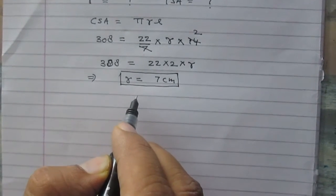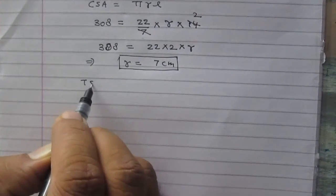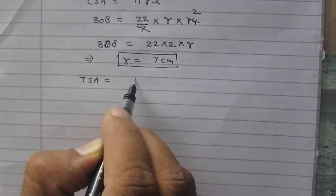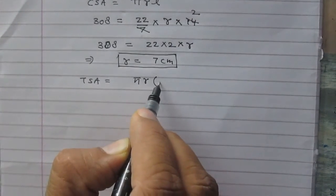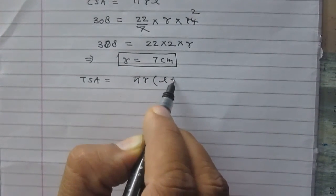Now, according to the formula, total surface area of this cone is πR(L + R).